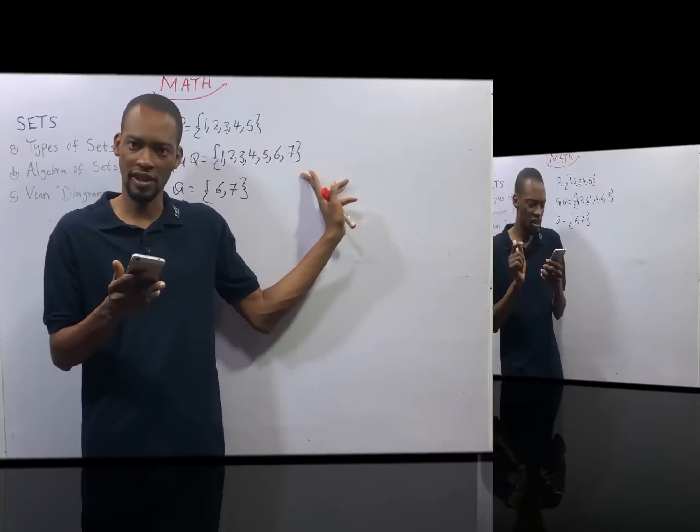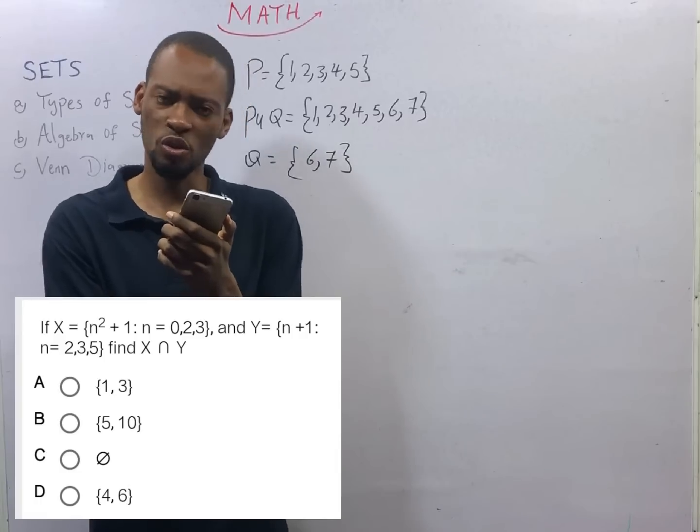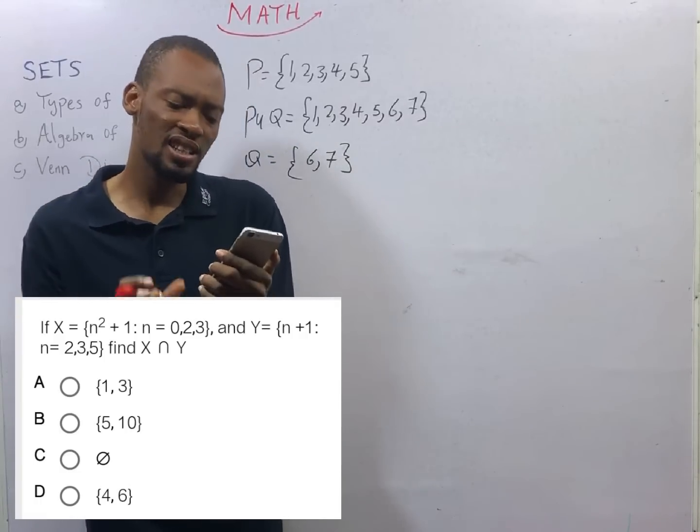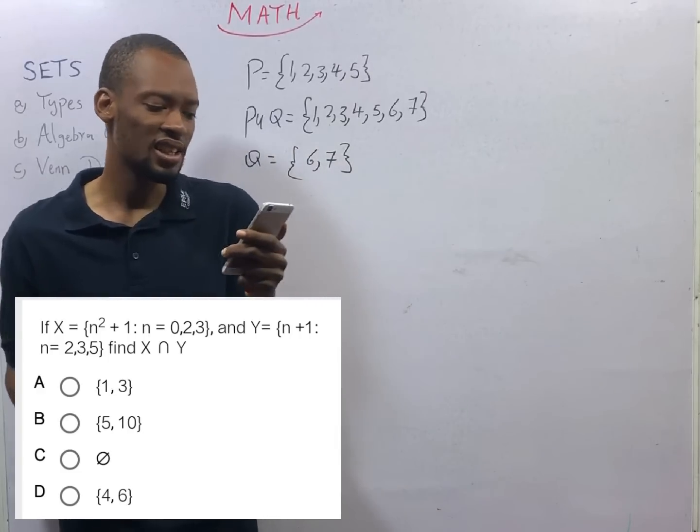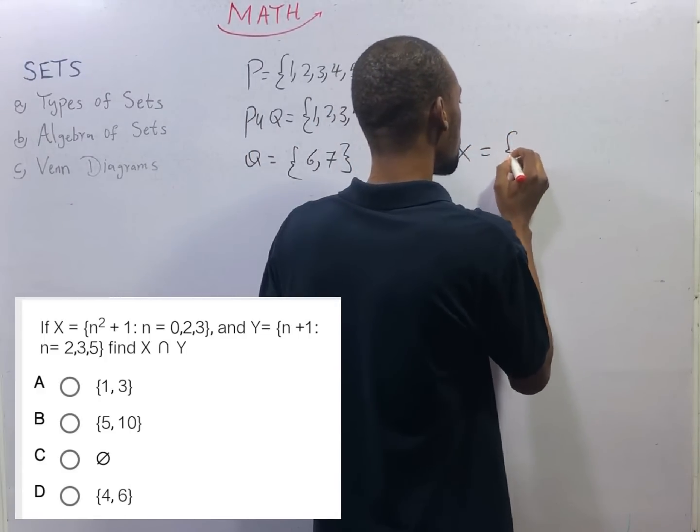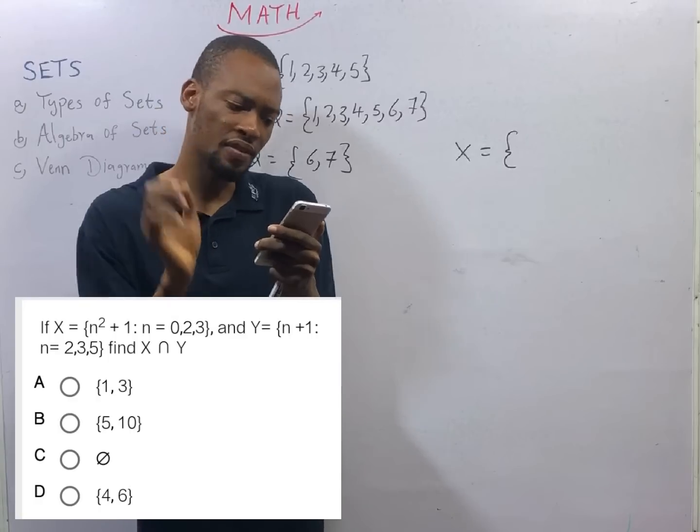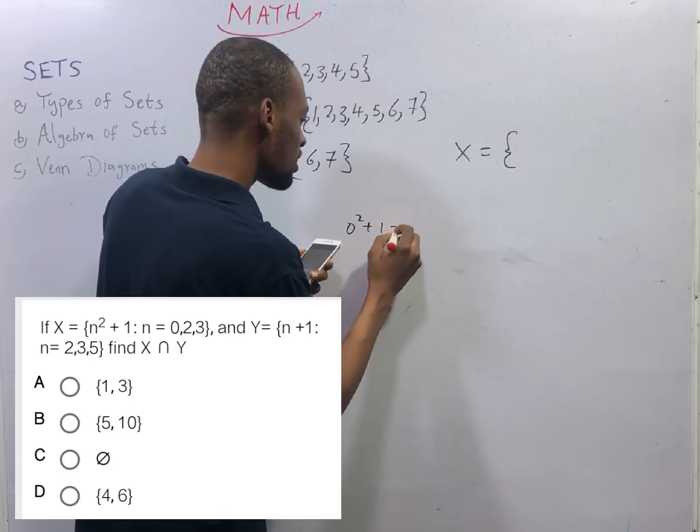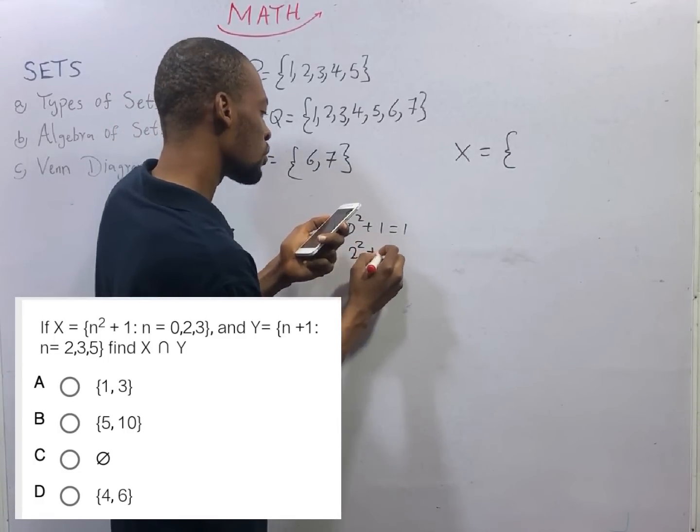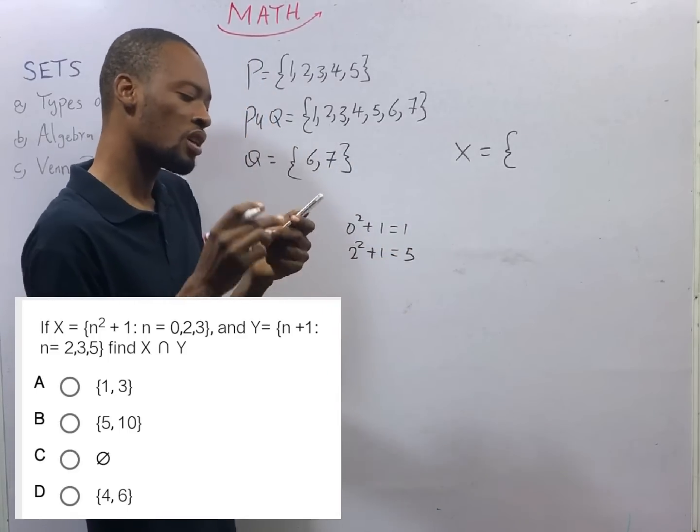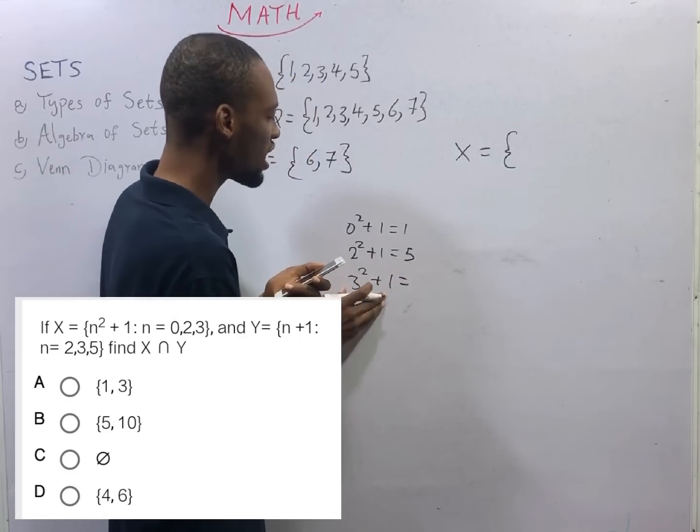We are given S is a set of N squared plus 1, such that N is equals 0, N is equals 2, and N is equals 3. Then Y is a set of N plus 1, such that N is equals 2, 3, and 5. Then, find N intersection Y. S is equals a set of values of N squared plus 1. If we take N to be 0, which is the first number that they gave us, N squared plus 1 will be 0 squared plus 1, that is equals 1. If we take N to be 2, which is the second number they are suggesting, N squared plus 1 will be 2 squared plus 1, that is equals 4 plus 1, 5. They gave us the third value of N to be 3. If N is 3, N squared will be 3 squared plus 1, that is 9 plus 1, 10.